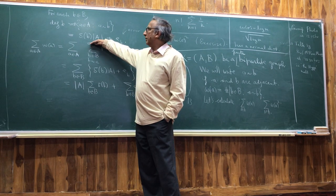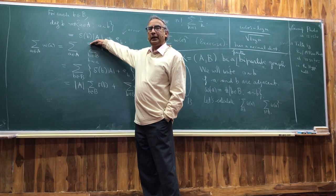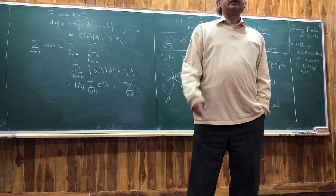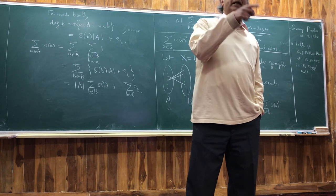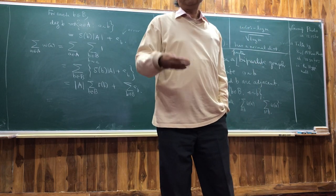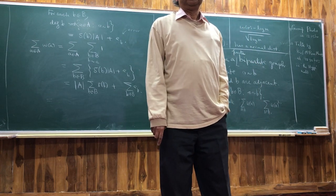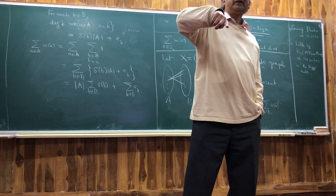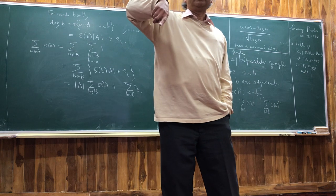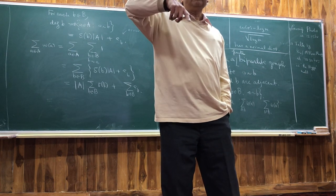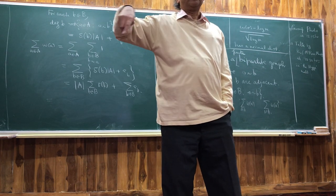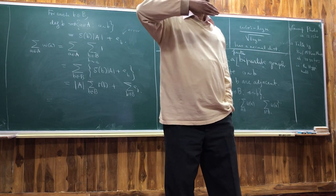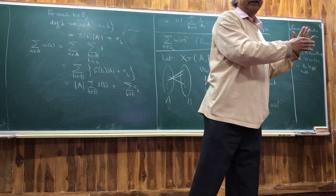This is inspired by what we did before: how many numbers are divisible by a prime p? Well, it's roughly (1/p) * N plus an error term. And when there are two primes p and q, how many numbers are divisible by pq? It's N/(pq) plus an error term. I'm using that as a metaphor to push myself into some abstract setting.